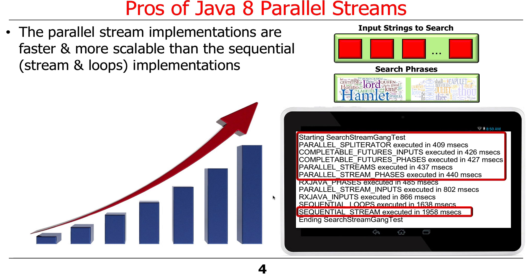As you've hopefully noticed, and you'll also see this when you do the assignment, the parallel stream implementations will almost always — not always, but almost always — be faster and more scalable than sequential solutions using streams or loops. There are some circumstances where they don't give you a speed-up, but for most realistic programs they will. The sequential streams version was substantially slower than the parallel versions — no surprise, really.